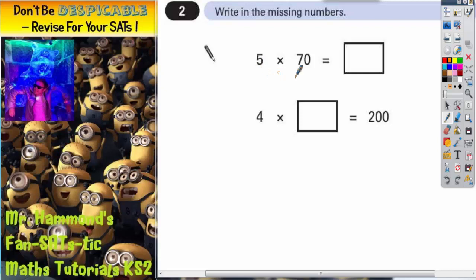So the first one, 5 times 70. Well, if you cover up the 0 and do 5 times 7, you get 35. So you put your 0 back on the end, so 5 times 70 is 350. So that's the first one done.